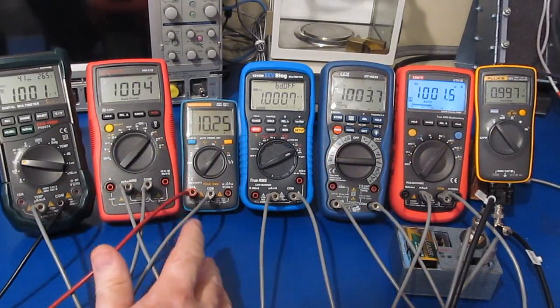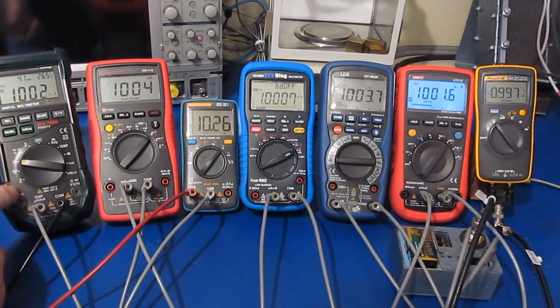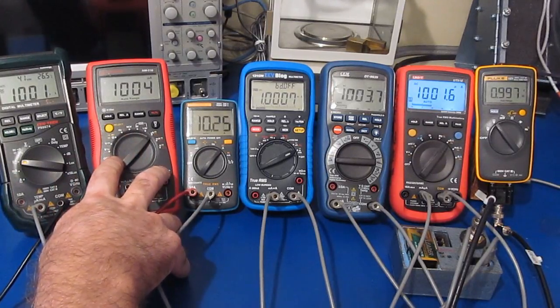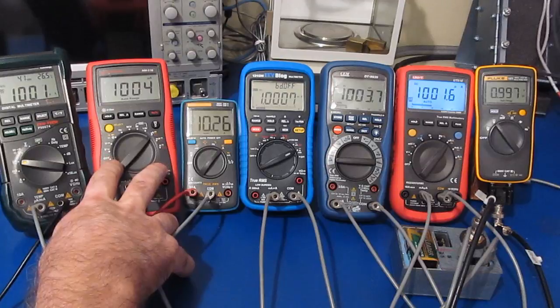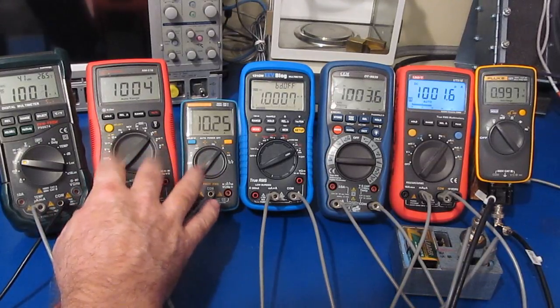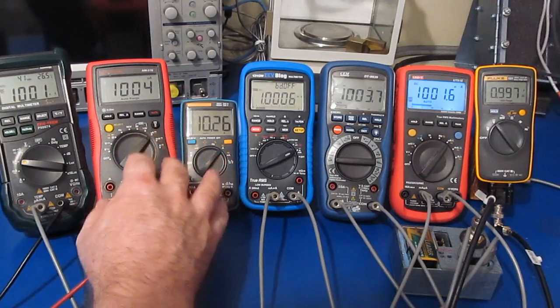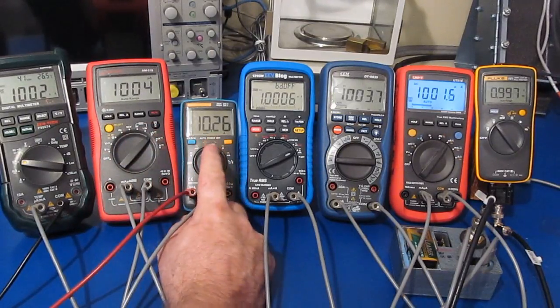All right, so currently all these meters are in series. On the far left, this is my Maztec from Harbor Freight. This is an Ampro BAM 510, the meter that was the runner-up in the first set of meters that I tested. Again, this meter was damaged during that transient testing and has been repaired.